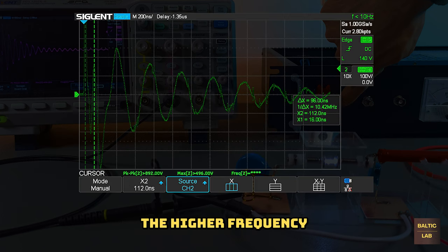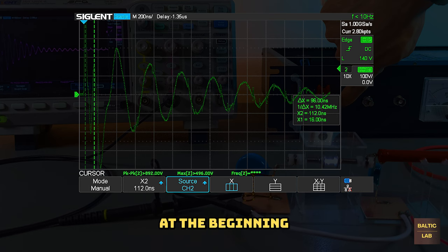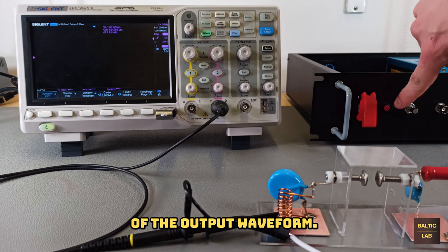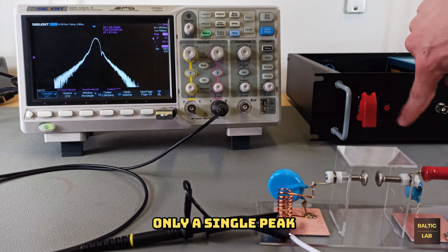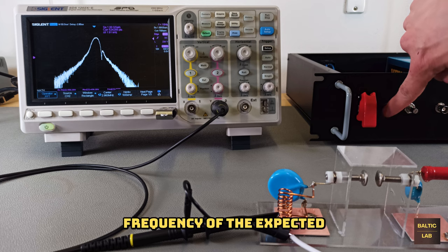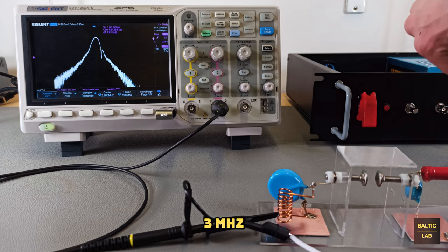To investigate the higher frequency oscillation at the beginning of the waveform that I so far chose to ignore, let's take a look at the spectrum of the output waveform. At first glance it appears that there is only a single peak at a center frequency of the expected 3 megahertz.